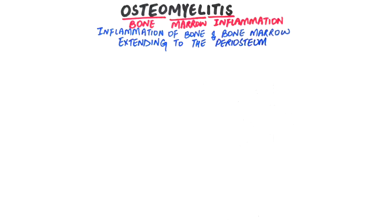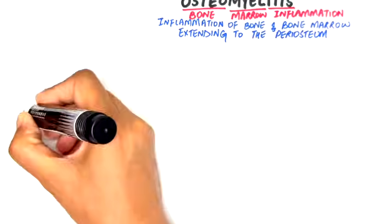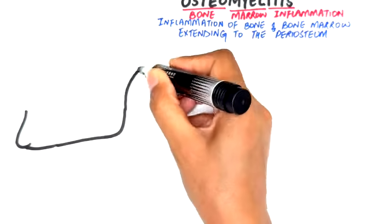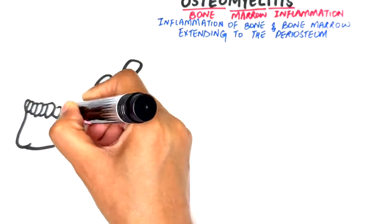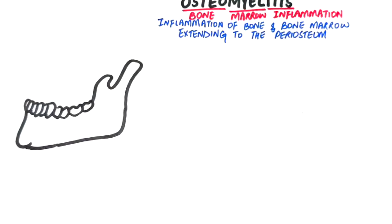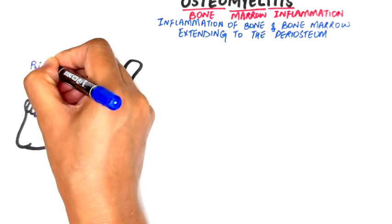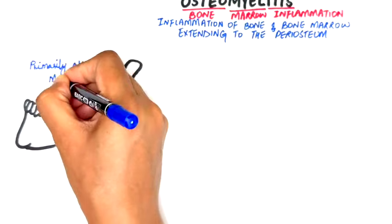The pathogens that trigger this inflammatory reaction are mainly bacteria, causing pain, swelling, and potential damage to bone tissue. Osteomyelitis primarily affects the mandible, with cases in the maxilla accounting for only 1–6% of all occurrences.